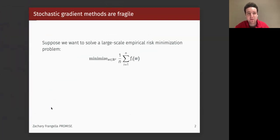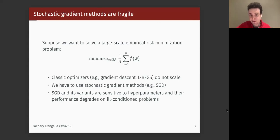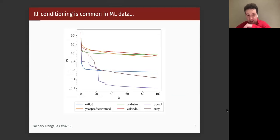A lot of people are familiar with machine learning, and the standard optimization problem in this setting is a large-scale finite sum empirical risk minimization problem. When N is very large and the data is high dimensional, classic methods like gradient descent and LBFGS just don't scale to these types of problems, and we have to use stochastic gradient methods. Stochastic gradient methods are great, but they can be sensitive to hyperparameters and their performance can really degrade when the data is very ill-conditioned. Ill-conditioning is really, really common in ML data.